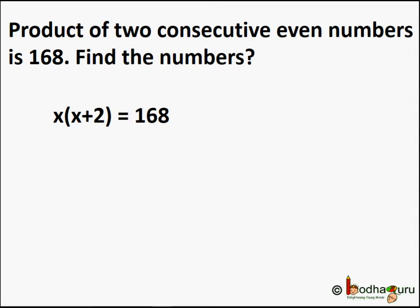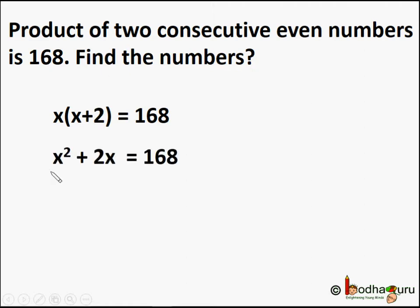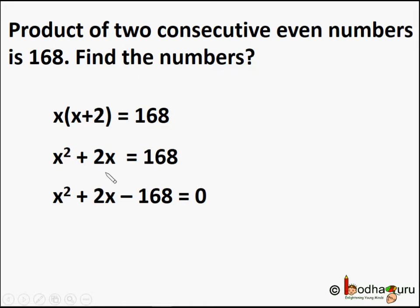Let's solve it. Let's say one number is x, and the next even number would be x plus 2. The product of two consecutive even numbers is 168, so x into x plus 2 is equal to 168, or x squared plus 2x equals 168, that is x squared plus 2x minus 168 is equal to 0.